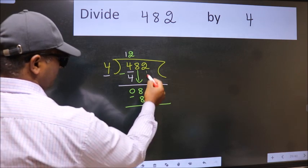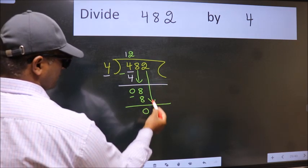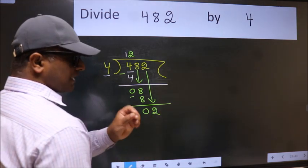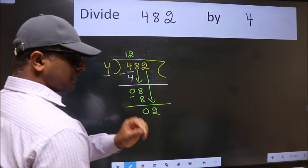After this, bring down the beside number. So, 2 down. After this step, the mistake happens. And the mistake is this.